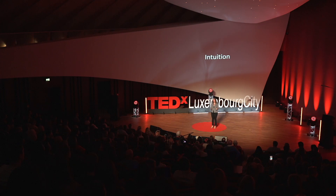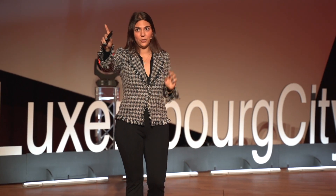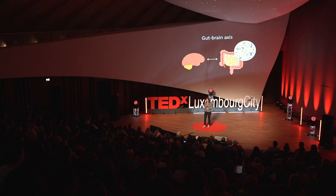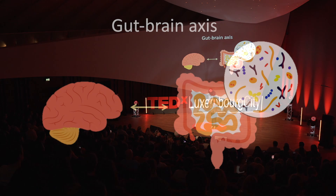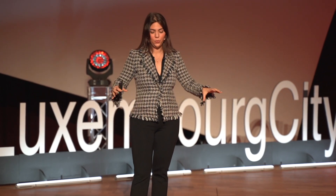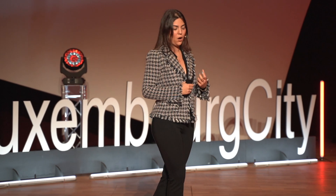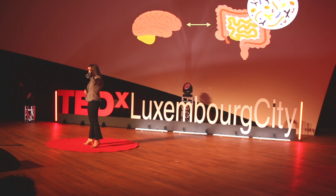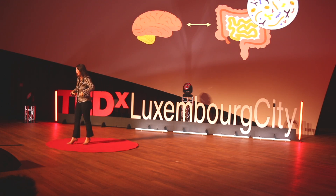So how can you turn up the volume on this instinct, sixth sense, gut feeling — however you may want to call it? Well, the answer is figuratively, but also literally, taking care of this gut feeling. The gut-brain axis is the bi-directional relationship between your central nervous system — your brain — and your gastrointestinal tract — your gut. Research into the gut has yielded extensive knowledge on the gut microbiota, the complex community of microbes and microorganisms inhabiting your gut. These microbes include various types of bacteria, viruses, fungi, and many others. And there are up to 100 trillion of them living in your gut as we speak.